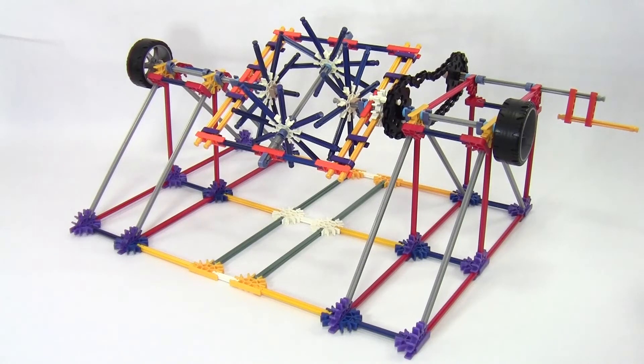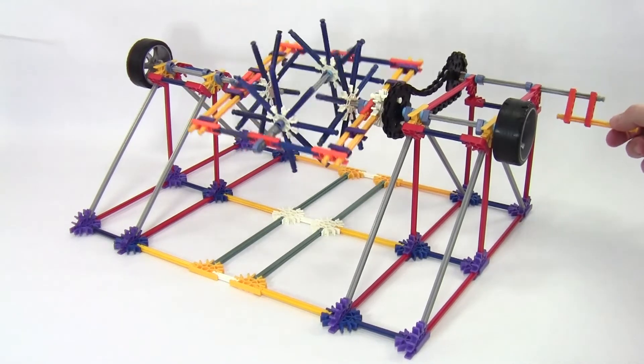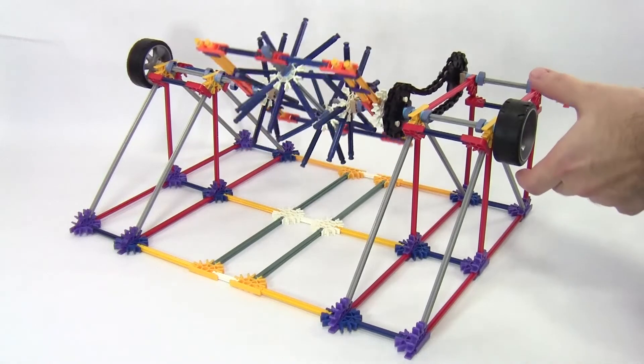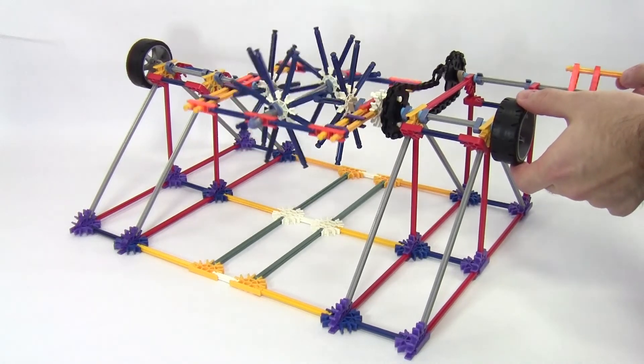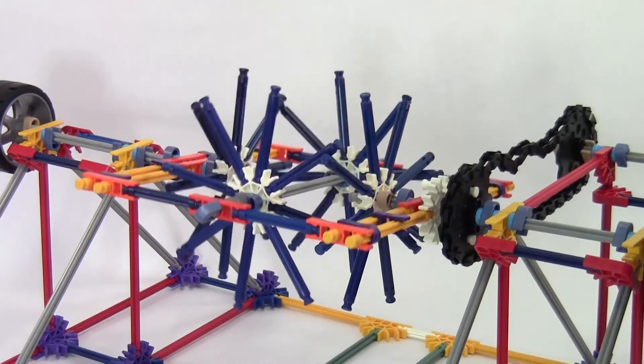You should now have a working model differential. Depending on the K'nex pieces you have available, you could try expanding your model by adding a chain drive as pictured here, a drive shaft with gears that change the direction of rotation of the shaft by 90 degrees, or even a motor.